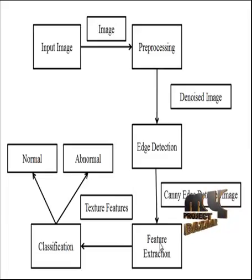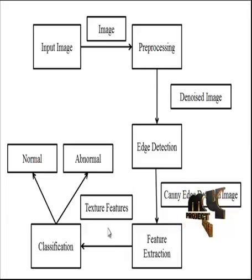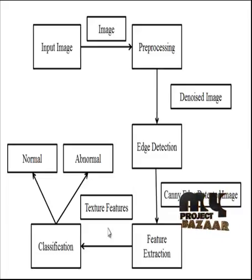After edge detection, the features are extracted as texture-based information retrieved from the images. This texture will be consistent for similar types of images. The GLCM features are extracted along with the Canny edge detection results. The extracted feature values are combined and used as texture features. The same process is repeated for a set of images in the dataset, which are used for the training process.